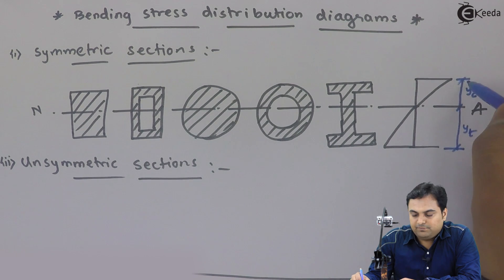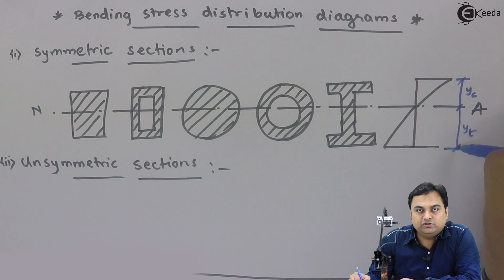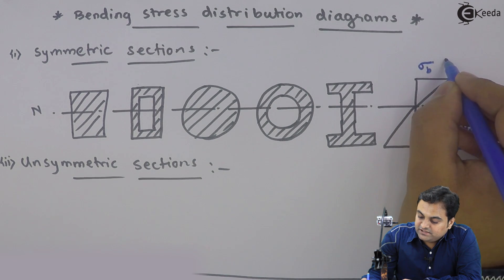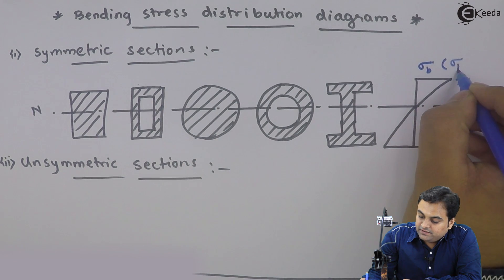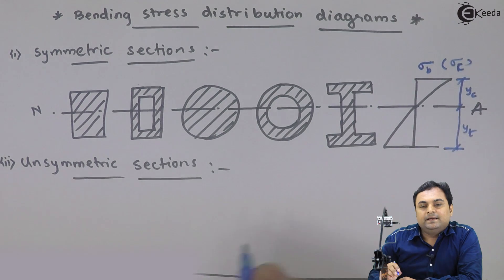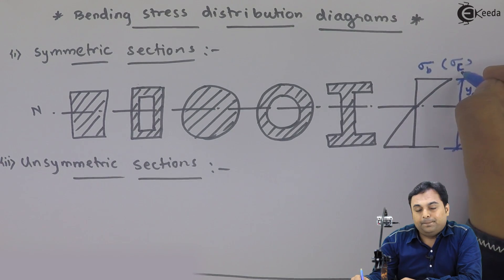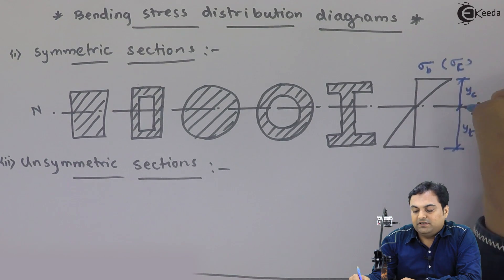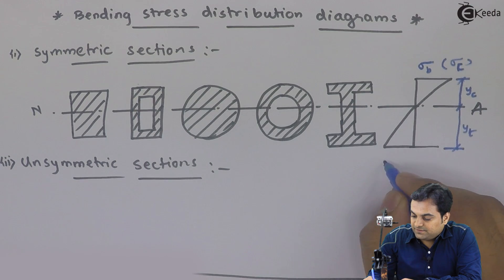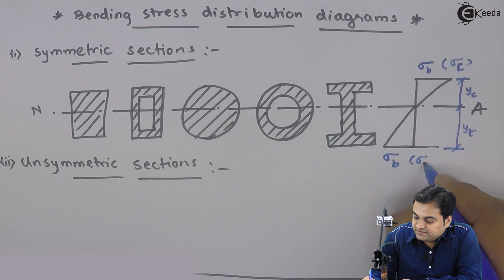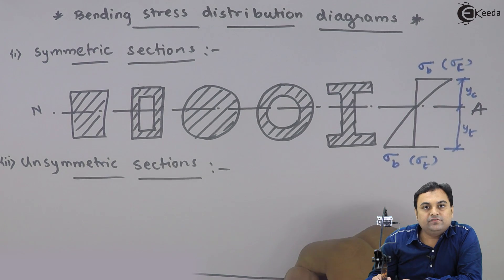Top layers are in compression and bottom layers are in tension. The bending stress on the top layer is compressive stress since the upper layers are in compression. The bottom layers are in tension, so the bending stress there is tensile stress in the bottom layers.